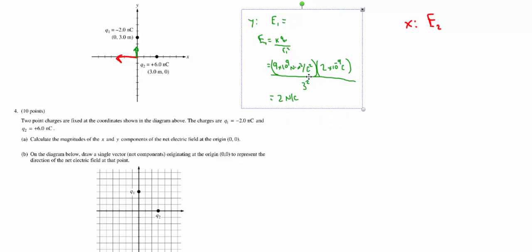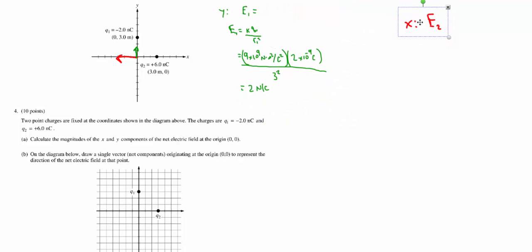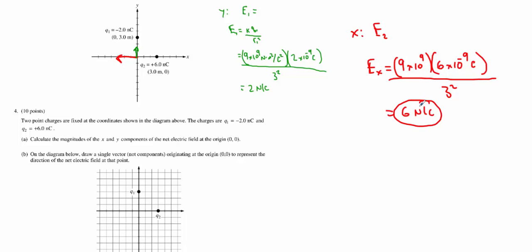We're going to do the x, which is simply the electric field due to the second charge. So E_x will be k, which is 9 by 10 to the 9, times q, which is 6 by 10 to the negative 9 Coulombs, 6 nanocoulombs. Divide that by 3 squared, and this ends up being 6 Newtons per Coulomb. That's all you had to do for A.